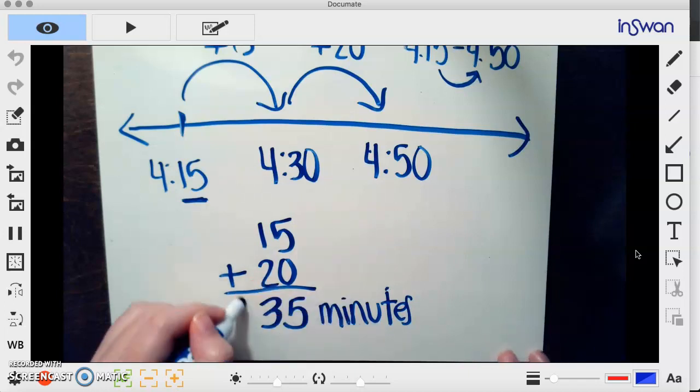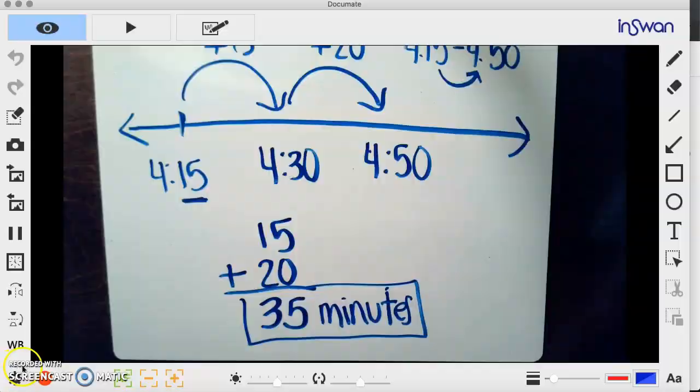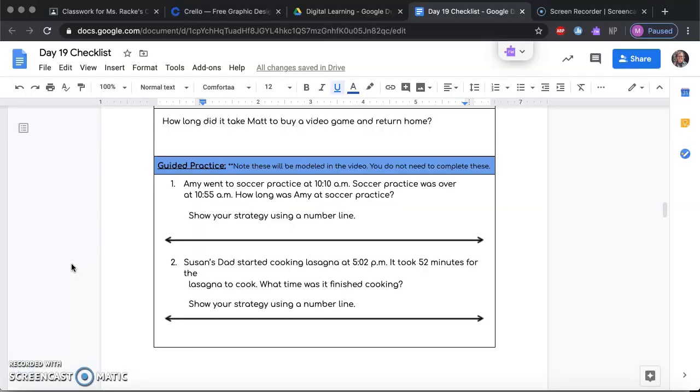When I add together 15 and 20, I get 35. So how long did it take Matt to buy a video game and return home? It took him 35 minutes. Now let's check out our guided practice questions. Just a reminder, these questions you do not need to complete—I'm modeling these for you as practice.